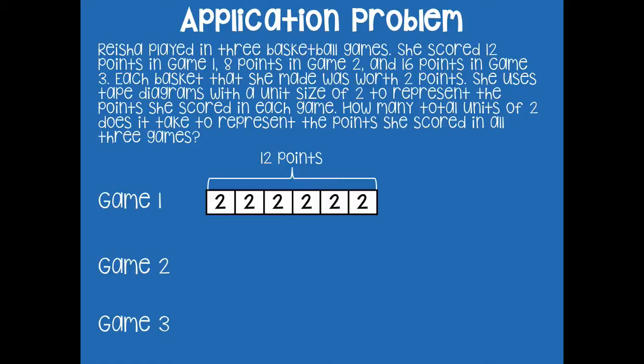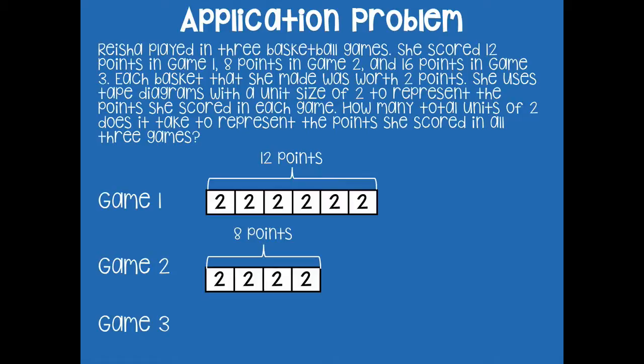For game two, we need eight total points, so we draw units of two and count by two until we reach eight: two, four, six, eight. Does your tape diagram look like mine? We have eight points in units of two, counting by two until we get to eight. Now pause the video and draw the tape diagram for game three — she scored 16 points. Click play when you're ready.